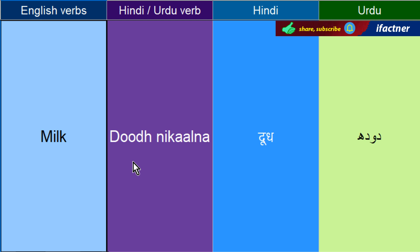Doodh nikalne ko Milk ka jata hai. He is milking the cow — woh bhaant se doodh nikal raha hai. Tawajjh dayne ko kehete hai — Mind. Mind your own business — aapne business pe tawajjh do. Koi aywin aake aapke kaamon mein tang aada raha ho, toh aap usse kehengay: Mind your own business.